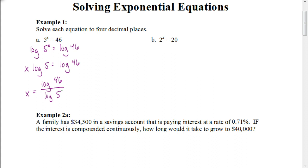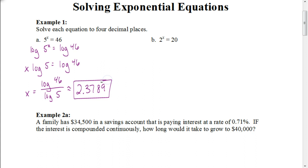This would be the only way this method works if we did not have a TI-Inspire calculator. If you're working with a scientific calculator, this is the method you'd want to use. Then to figure this out, we take the log of 46 divided by the log of 5, and you get your answer of approximately 2.3789, rounded to 4 decimal places. That would be your answer.